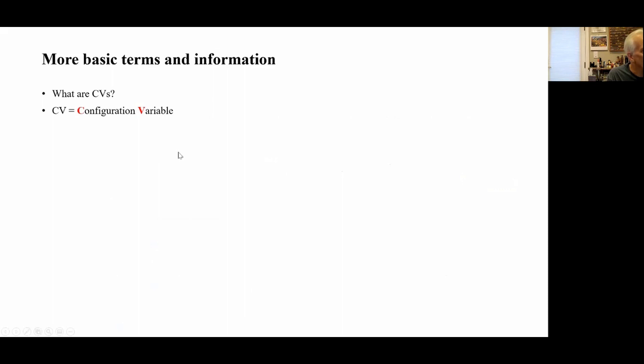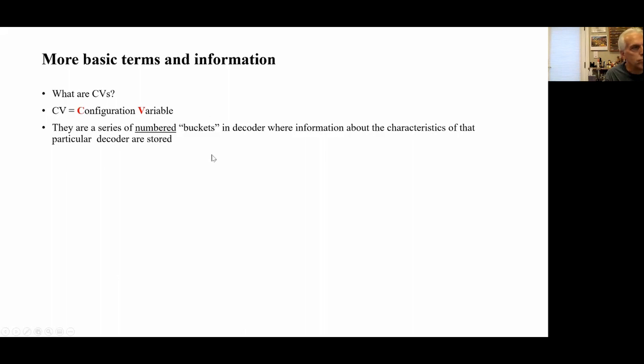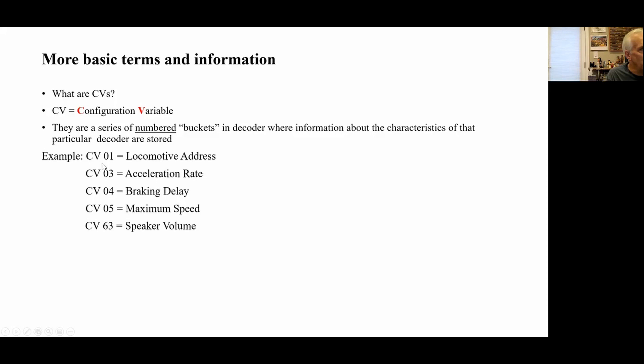Let's talk about CVs — some basic information. What are CVs? CV stands for configuration variable. They are a series of numbered buckets in a decoder where information about the characteristics of that particular decoder are stored. For example, CV bucket number one is where the locomotive address is. CV03 is the place where the acceleration rate is stored. CV04 is the braking delay, CV05 is the maximum speed, and CV63 is where the volume level for the speaker is controlled.